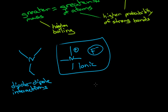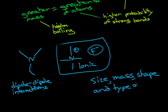So overall, what matters is size, mass, shape, and type of bond. A greater mass is a higher boiling point. A more high surface area shape will have a higher boiling point. And the more polar the bonds are, the higher the boiling point.